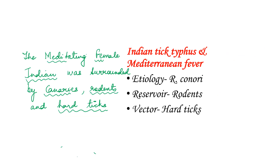The next mnemonic is: 'The meditating female Indian was surrounded by canneries, rodents and hard ticks.' By 'meditating female' we remember Mediterranean fever, and by 'Indian' we remember Indian tick typhus. Both diseases have Rickettsia conorii as the causative agent — remembered by 'canneries,' which are kinds of beautiful small birds. The reservoir is rodents and the vector is hard tick.